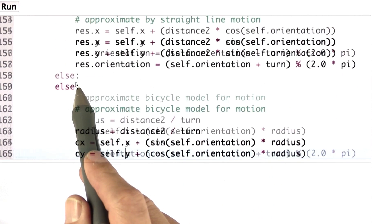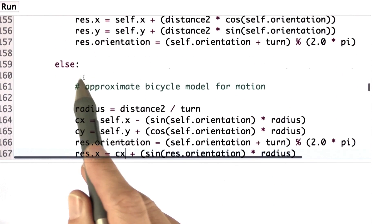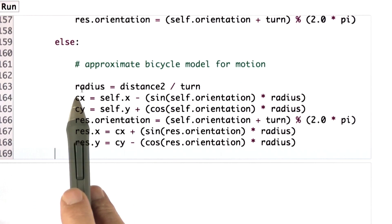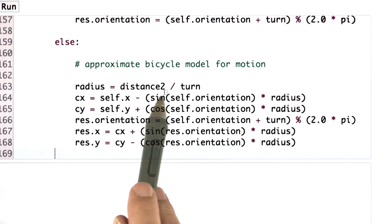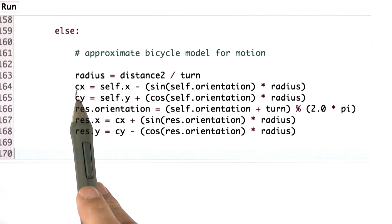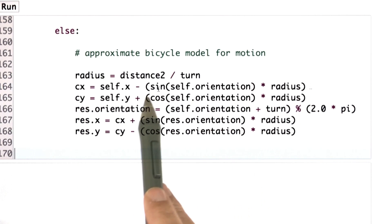The more interesting case as we go down in this program: you can see that I now calculate the radius as distance, the noisy distance divided by turning. Then I find the center of the circle around which I'm turning using the exact same math I just gave you.